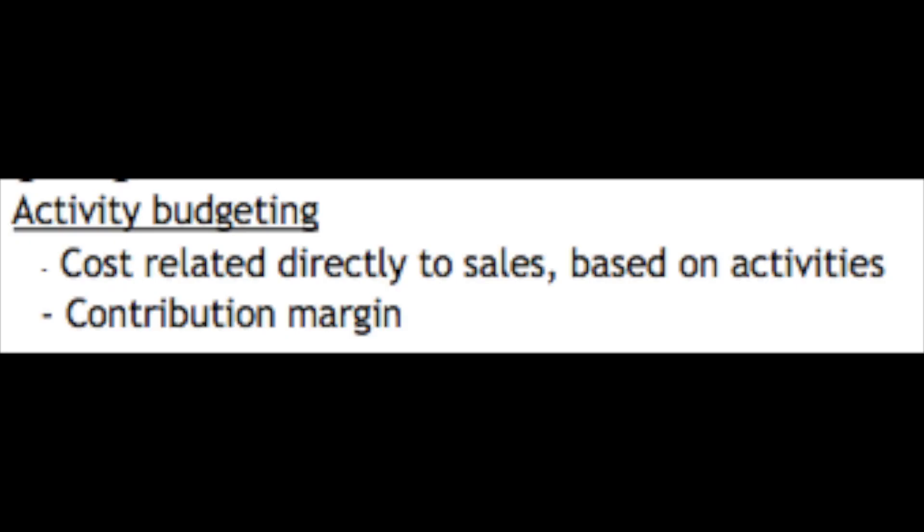When we talk about budgeting in business economics, we talk about two things. First of all, we talk about an activity budget. There we talk about a limited product range. This could be the case when a company is actually only selling a few items — a company where they have a couple of different products in their portfolio, but not more.